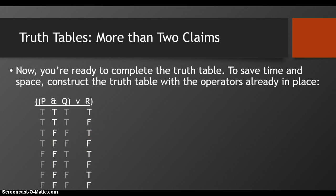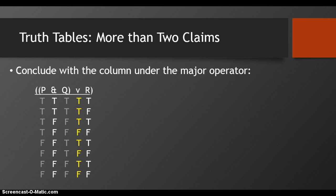Now you're ready to complete the truth table for this more complex claim. To save time and space, construct the truth table with the operators already in place. Underneath the AND, we apply the truth table for the conjunction to get the truth values for P and Q in this more complex claim. Then we take the column under the ampersand — the conjunction — and the column under R, which is by itself a simple claim, and apply the truth table for the disjunction. The two columns in white result in the column in yellow when we apply the truth table for the disjunction. This is the complete truth table for this disjunction.